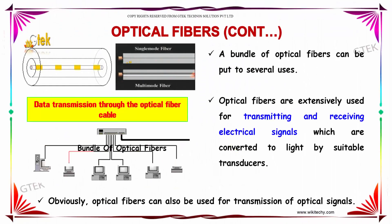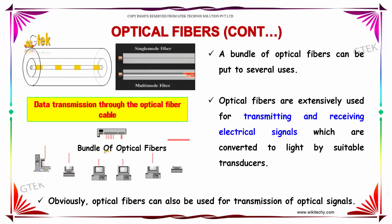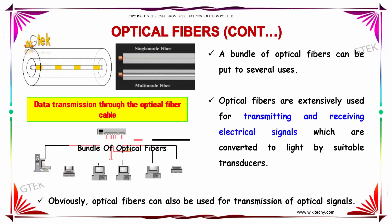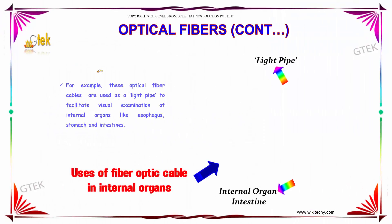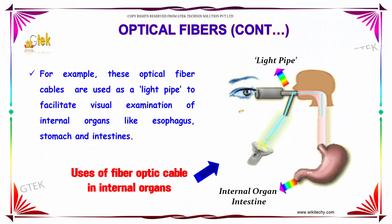A bundle of optical fibers can be put to several uses. Optical fibers are extensively used for transmitting and receiving electrical signals, which are converted to light by suitable transducers. Optical fibers can also be used for transmission of optical signals. For example, these optical fiber cables are used as light pipes — as you can see — to facilitate a visual examination of internal organs like the esophagus.